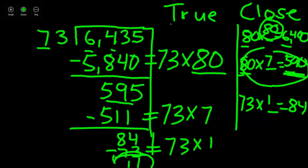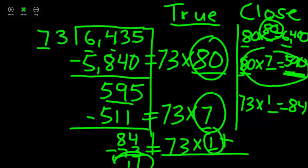So what we need to do is come back to our true column here. We need to add up all those factors that we multiplied 73 by. First, we have 80. I'm going to put my addition symbol here. 80 plus 7 plus 1. And your answer will be 88 with a remainder of 11 for our final answer.